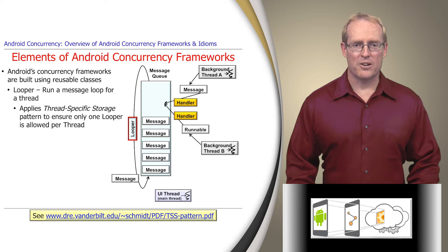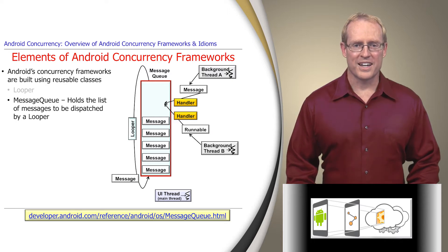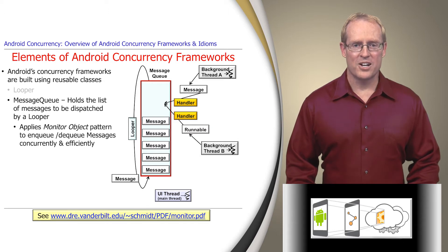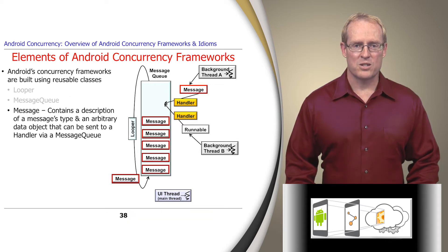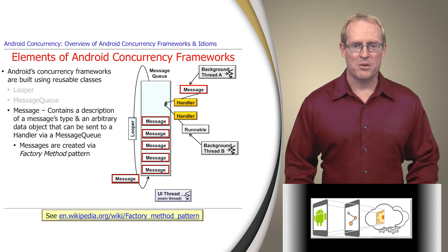The thread-specific storage pattern is used to ensure there's only one looper per thread. A message queue holds a list of messages to be dispatched by a looper. Android's message queue class applies the monitor object pattern to enable threads to enqueue and dequeue messages concurrently. A message contains descriptions of a message's type or other information and an arbitrary data object that can be sent to a handler via its looper's message queue. Messages are created via a factory method pattern.